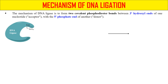Now let's discuss the mechanism of DNA ligation. DNA ligation is the joining of two DNA fragments, so technically there is a formation of a phosphodiester bond between the 3-hydroxyl end of one nucleotide and the 5' end of another. This molecule is the DNA ligase enzyme, and there is a presence of the amino acid lysine at the active site, which has a free NH2 group on its side chain.